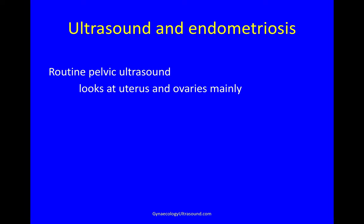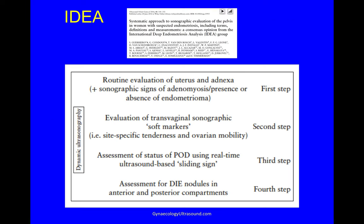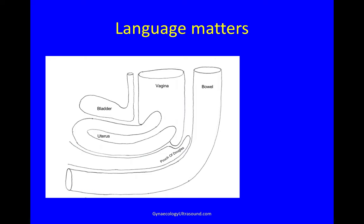A routine pelvic ultrasound looks at the uterus and the ovaries, but you really need to look for deep endometriosis, for mobility, and for site-specific tenderness. The IDEA group published a paper back in 2016 giving us two things: a common language that sonographers and surgeons can use with the same words, and a system for how to look for endometriosis. The language is terribly important — in this image you can see the bladder, the uterus, and the bowel. If you draw a line through the cervix through the internal os, then behind that is the torus. If you draw another line underneath the cervix, then the area in orange is the rectovaginal septum.